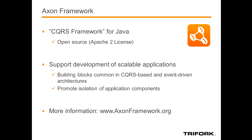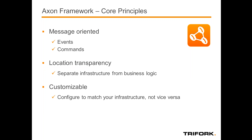More importantly, Axon promotes the isolation of application components. It allows you to build an application in a monolithic way without having to fear that you're stuck with a monolith forever. You can break it down into components as you like because of this isolation. As long as you use the Axon APIs properly, you can scale and break up your application into a distributed application without any pain. It's very message-oriented — there's a lot of messaging going on in Axon, mainly in the events and commands — and location transparency is key.